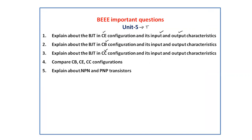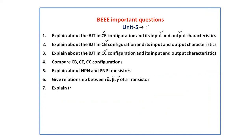Explain about NPN and PNP transistors with diagrams and equations. Give the relation between alpha, beta, and gamma — the current gains of the common base, common emitter, and common collector configurations respectively — and explain the relationships among them.